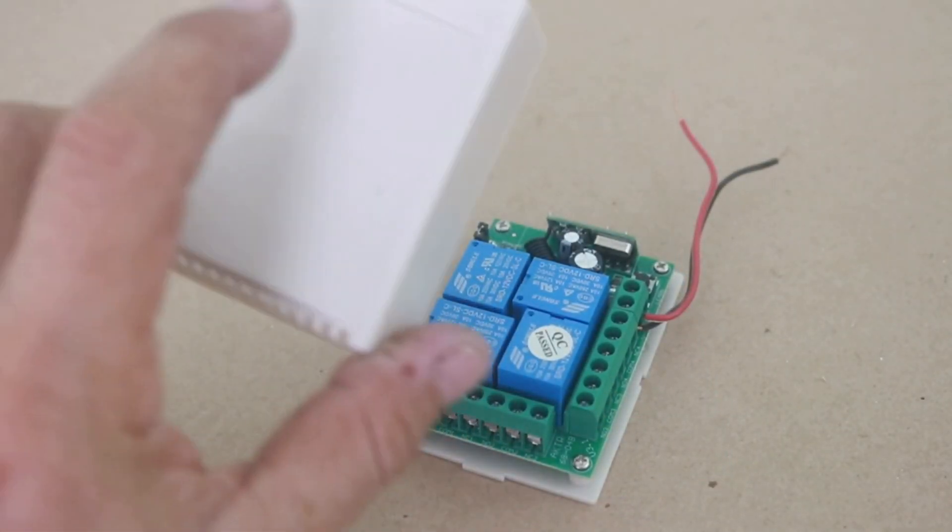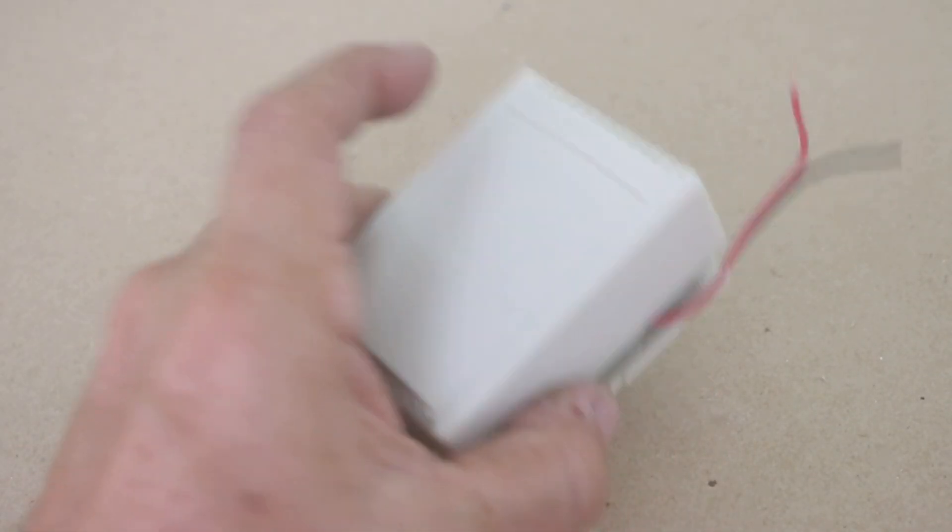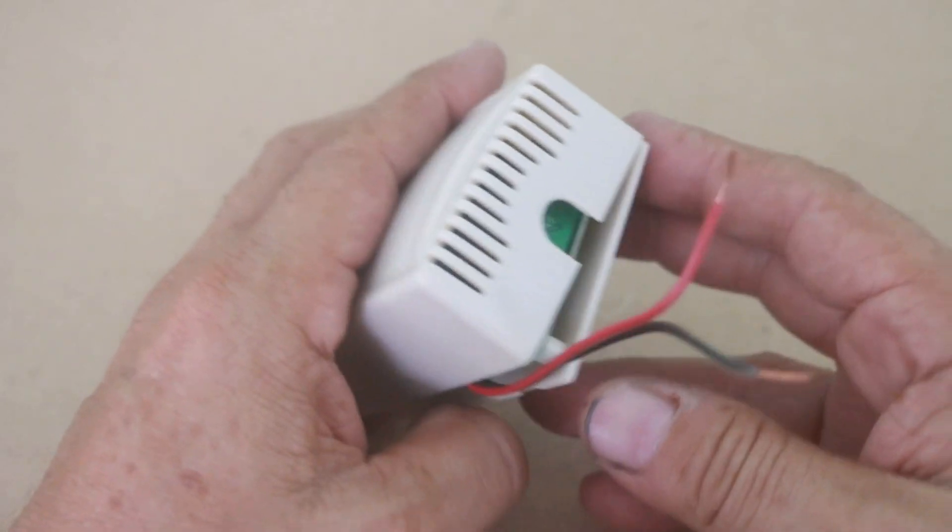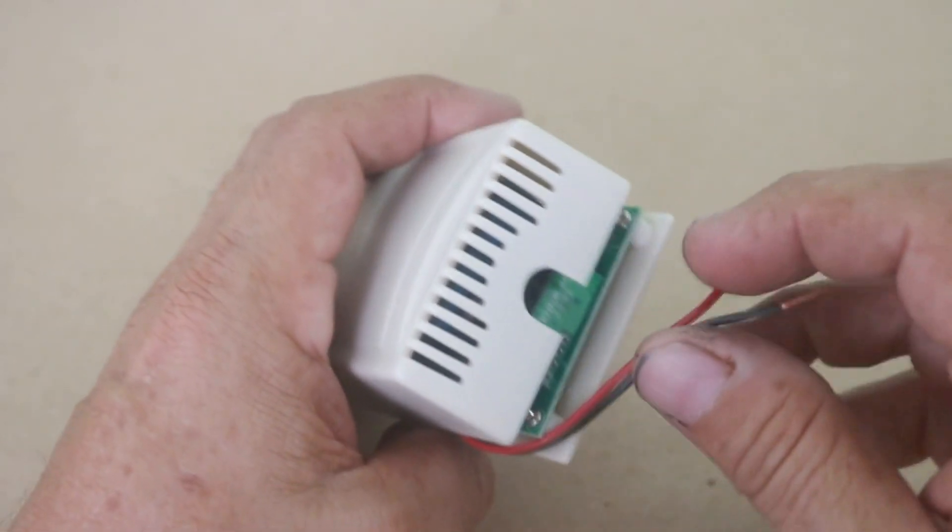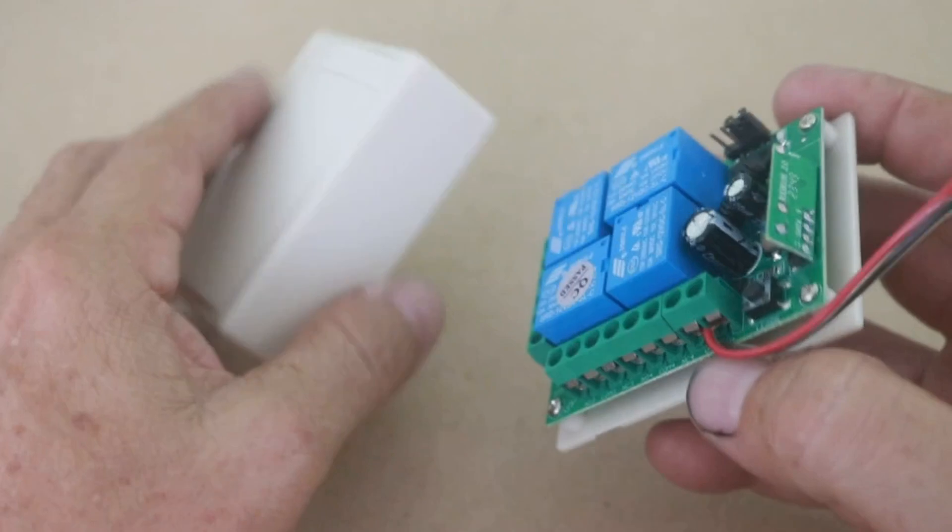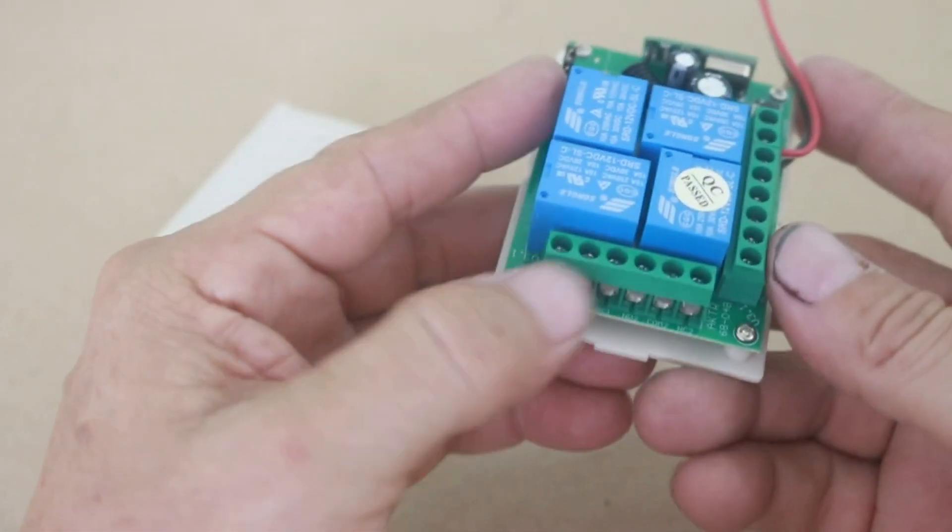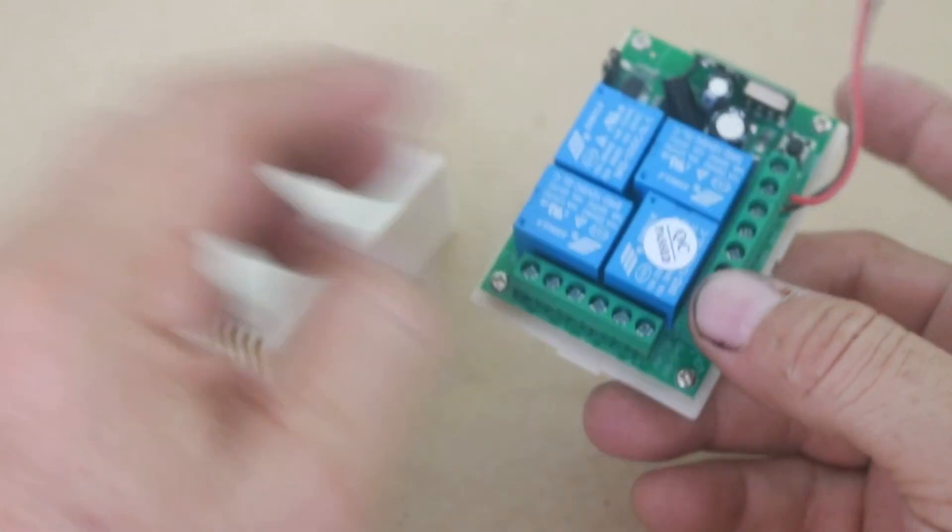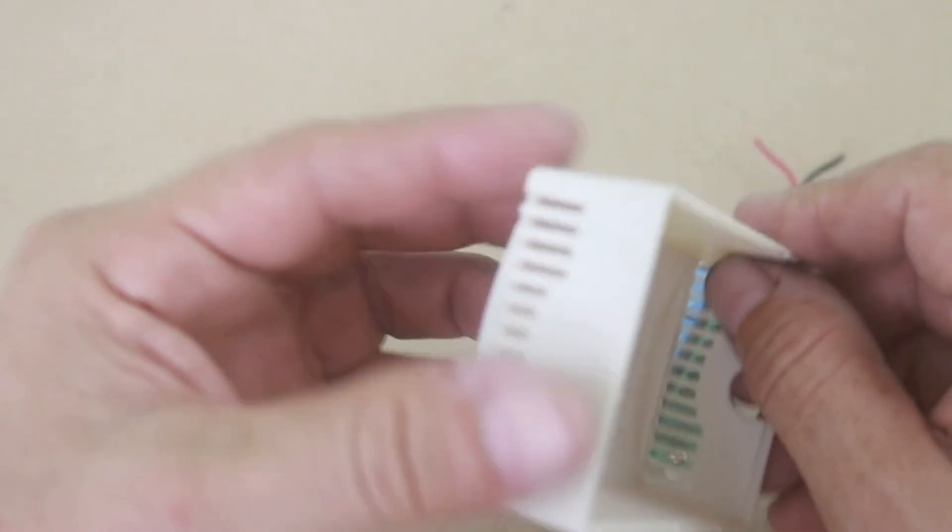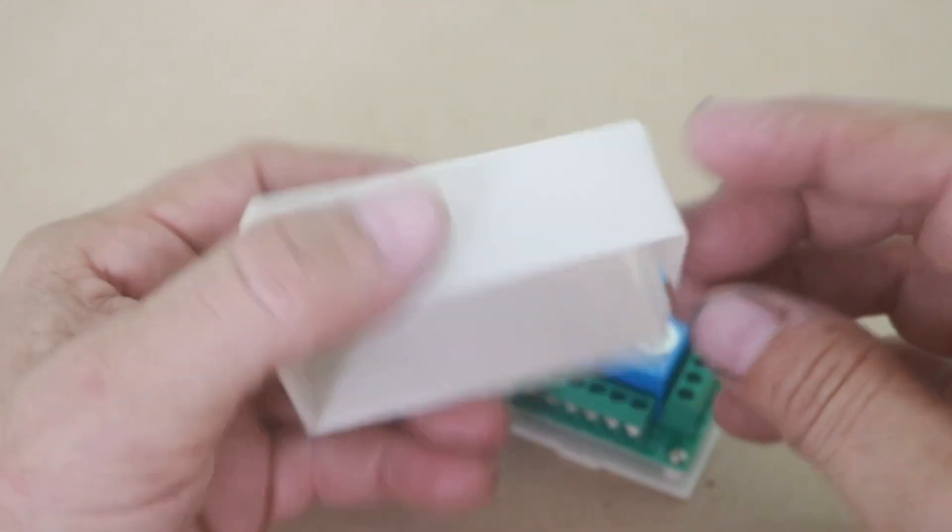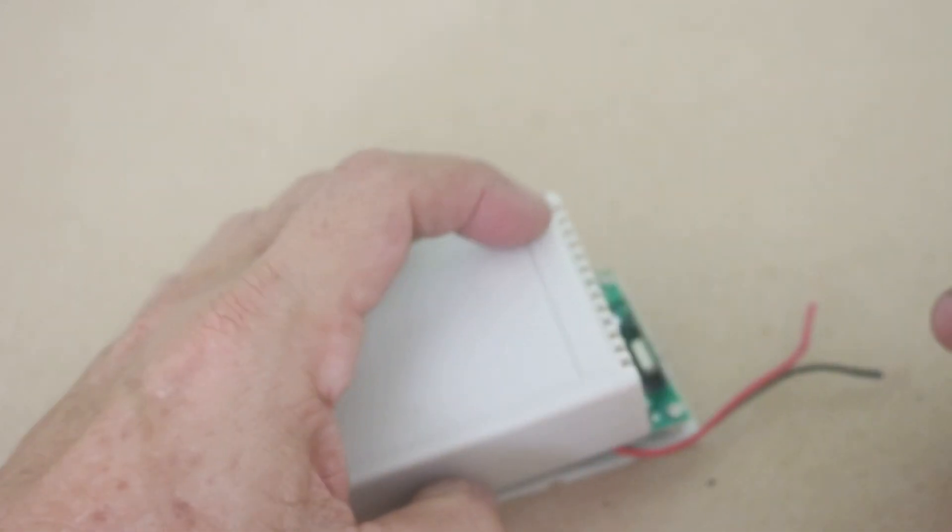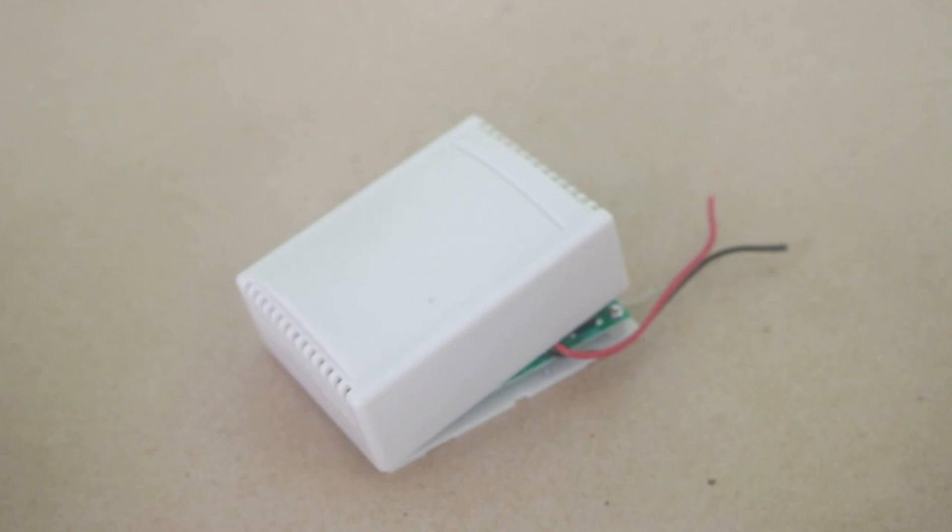It comes with a case to cover it. However, it only has one hole to take out the cables, so it is not useful because you can have several cables coming out of it and has no more holes. But well, you can't expect much from a device that costs as little as five or six dollars.